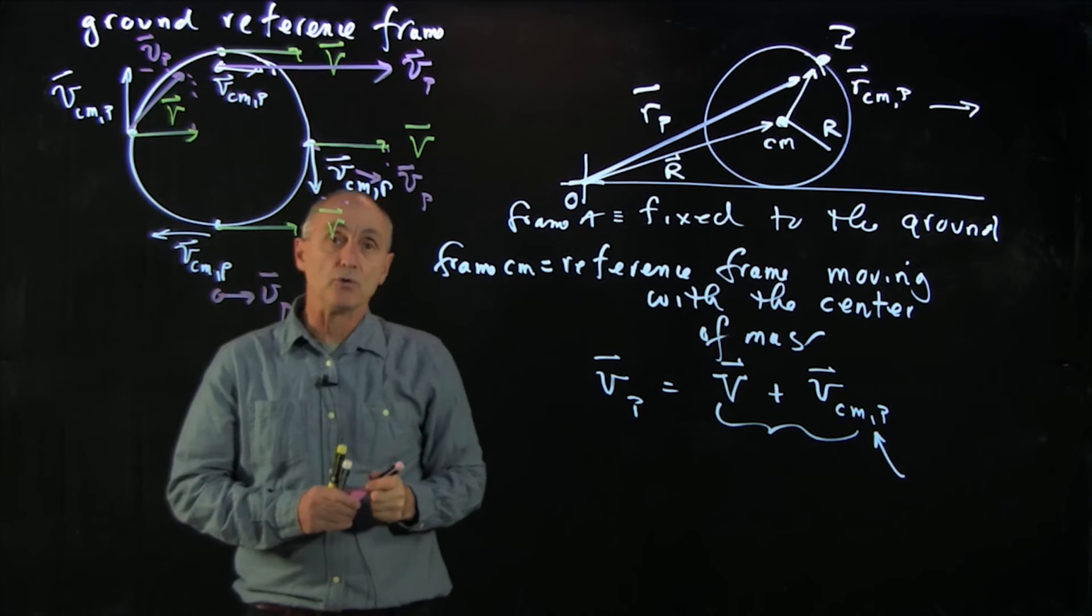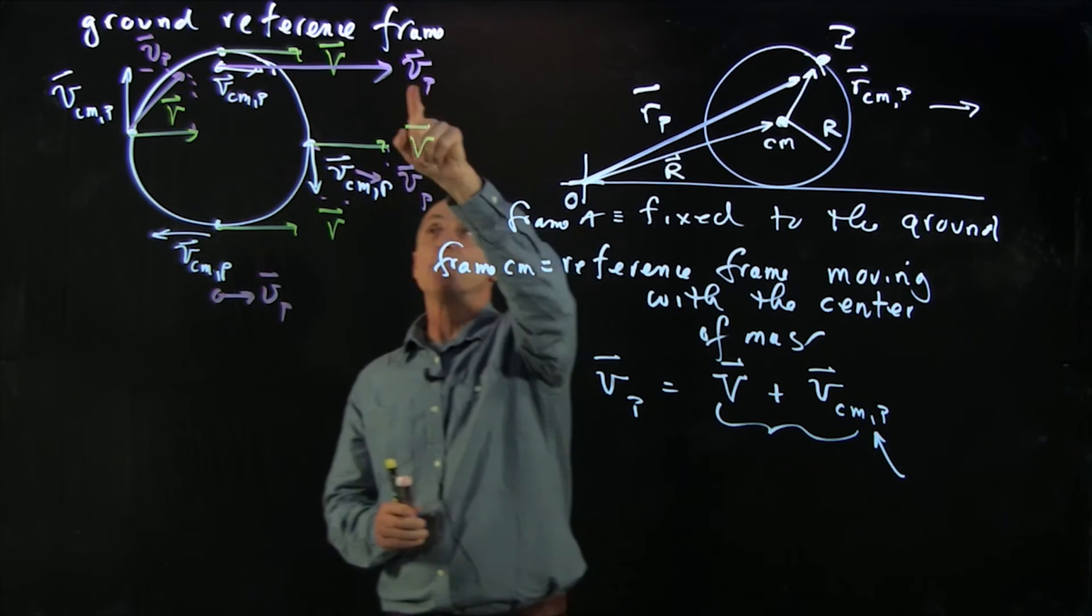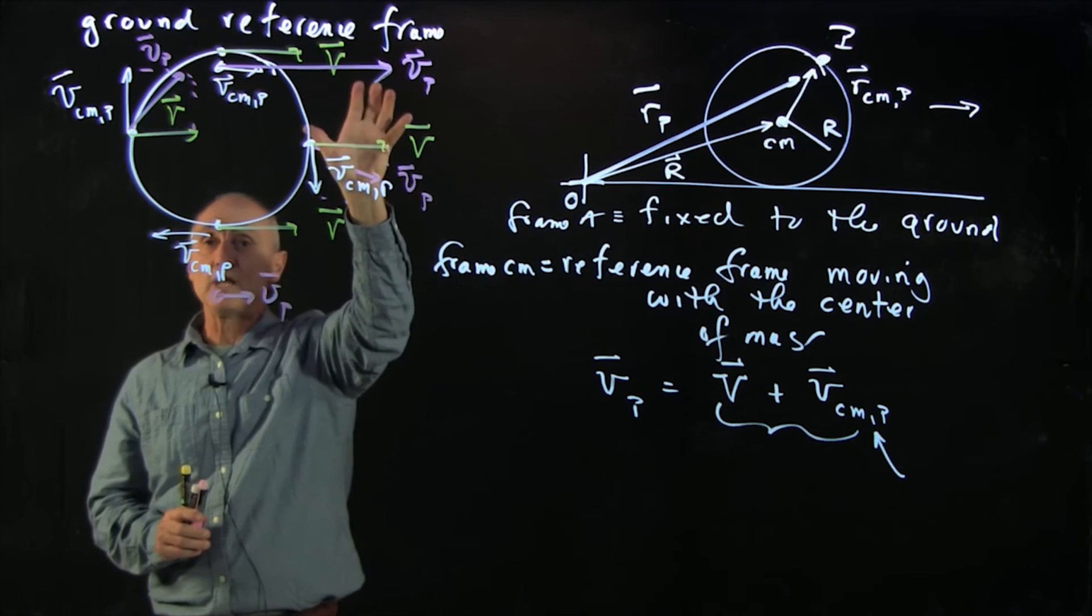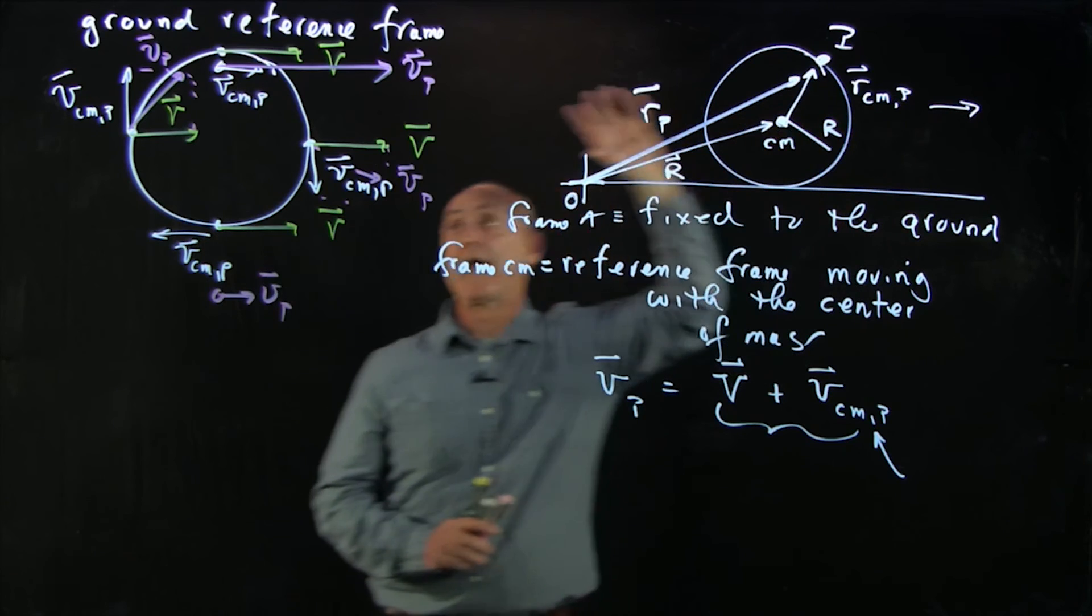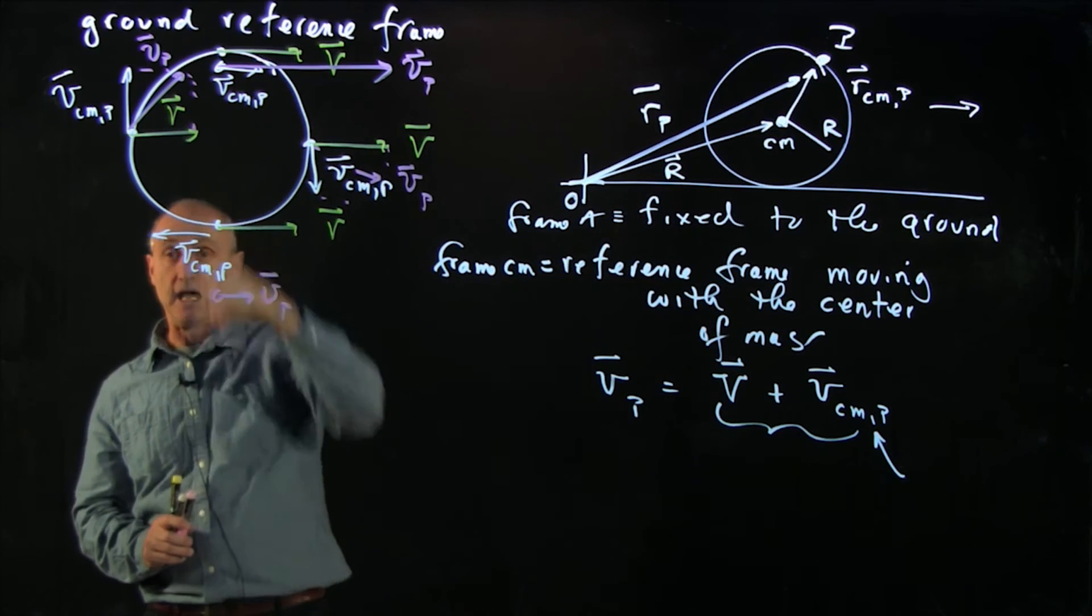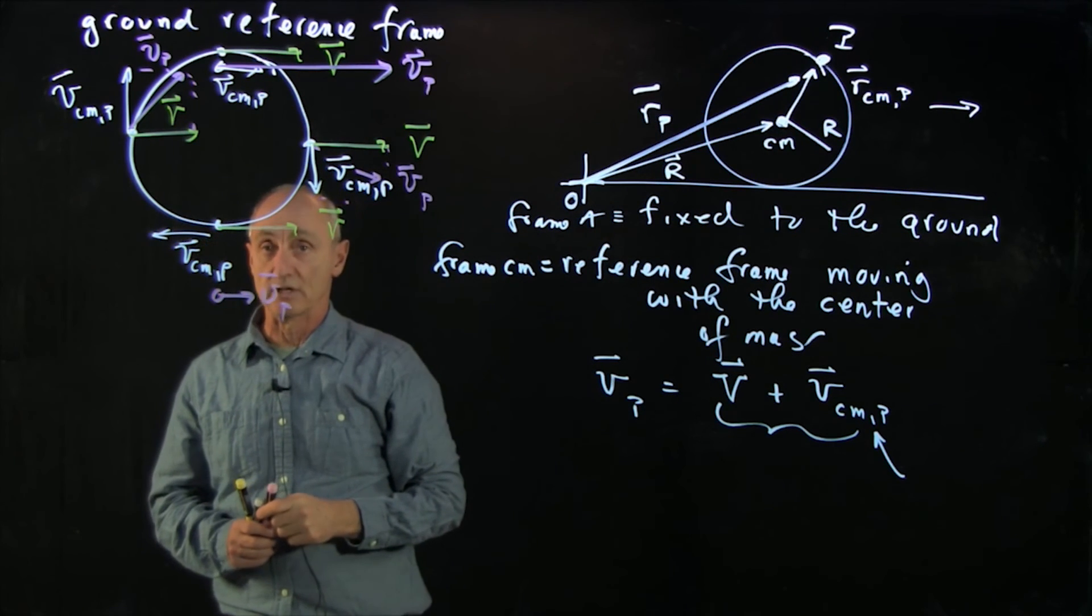So now what we've been able to do is describe the velocity of the point p as a combination, the vector addition, of how the center of mass of the wheel is moving and the circular motion as seen in a reference frame moving with the center of mass.